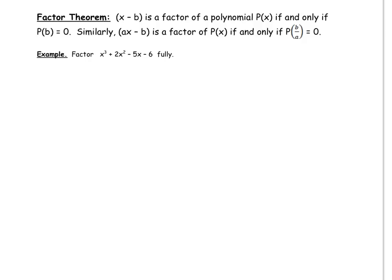In our first example, the first thing we need to do is find the first factor. We're going to use the remainder theorem to do that. We're going to look to the constant term at the end — we're going to look at that negative 6 and look at possible factors of 6. So possible factors of 6 would be plus or minus 1 with plus or minus 6, and plus or minus 2 times plus or minus 3. We're going to start testing these to see which gives a remainder of 0.